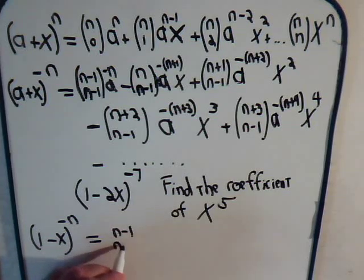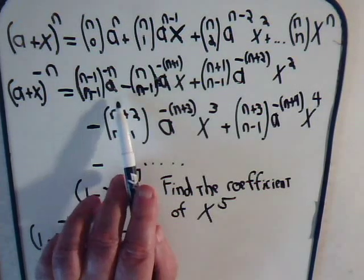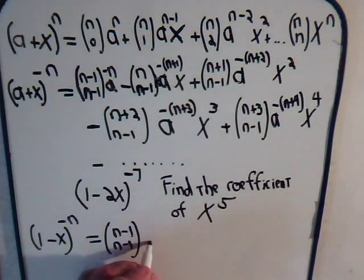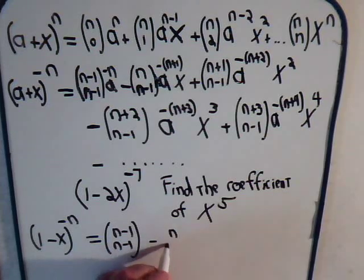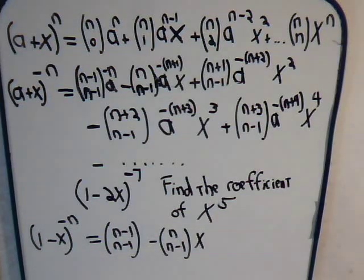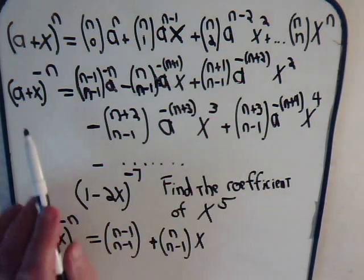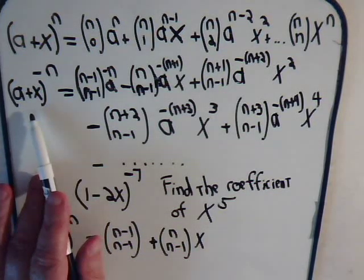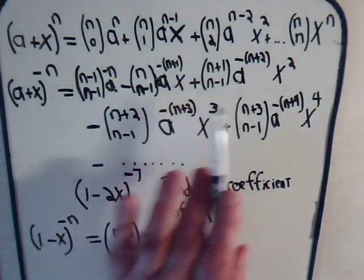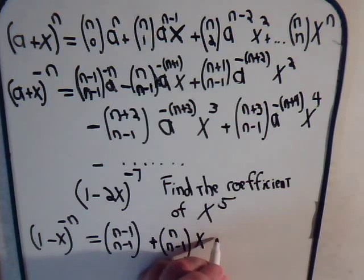So here for the first term, a is just 1, and since a is just 1, now we have x. In fact, this is a minus sign though, so all the terms will be positive. If this was a minus x, we would not have alternating plus and minus terms, all the terms would then be positive. So we can just continue along.